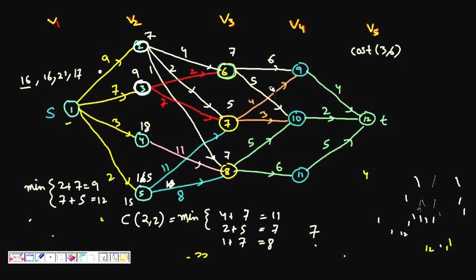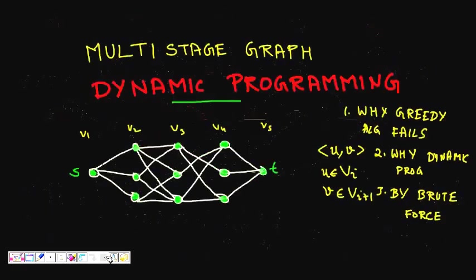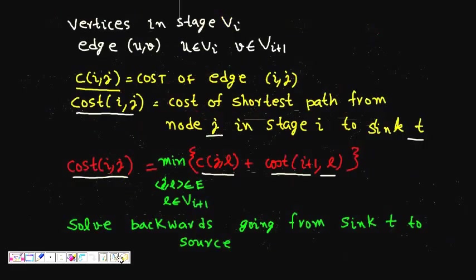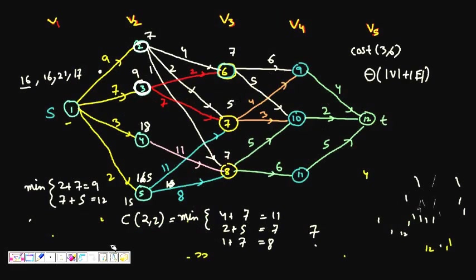The for loop runs for all nodes, and each node processes its outgoing edges, making this a Θ(|V|+|E|) algorithm. This is the dynamic programming approach to finding the shortest path in a multi-stage graph from source to sink. Please subscribe to my YouTube channel and share with your friends.